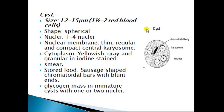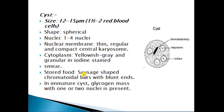The third stage is the cyst. The size of the cyst varies from 12 micrometers to 15 micrometers and its shape is spherical. One to four nuclei are present — here you can see four nuclei. The nuclear membrane is thin and regular, with a compact central karyosome visible in the center. When the cyst is stained, the cytoplasm appears yellowish-gray and granular in nature. The stored food in the cyst appears as stained cigar-shaped chromatoid bars with blunt ends.